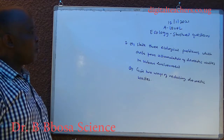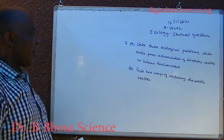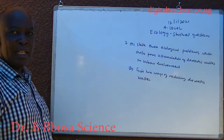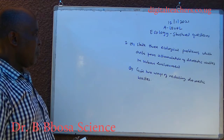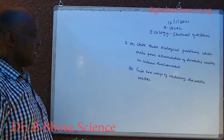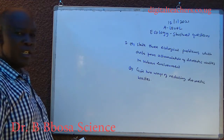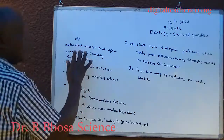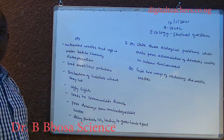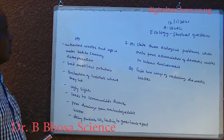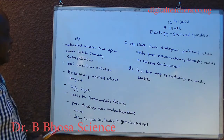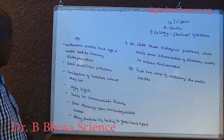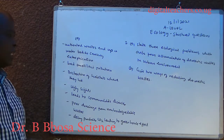State three ecological problems which arise from accumulation of domestic waste in urban environments. Give two ways of reducing domestic waste. You can pause and answer. Ecological problems of domestic waste: Untreated waste ends up in water bodies causing pollution. They produce bad smell.